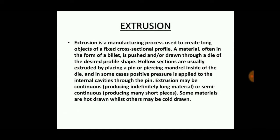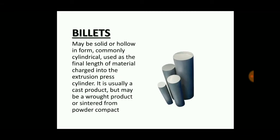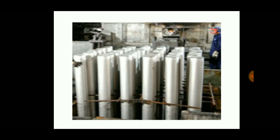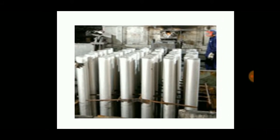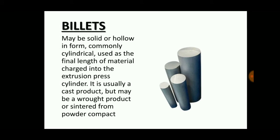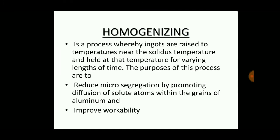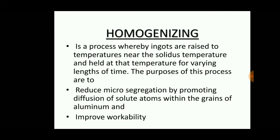Extrusion is a manufacturing process for extruding material through a die. A billet is used as the raw material and a die acts as a model or template for the shaft. The billet can be steel or an alloy and is used as the final length of material charged into the extrusion press cylinder.